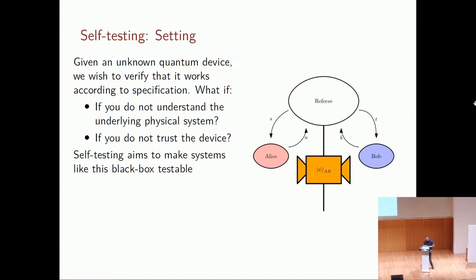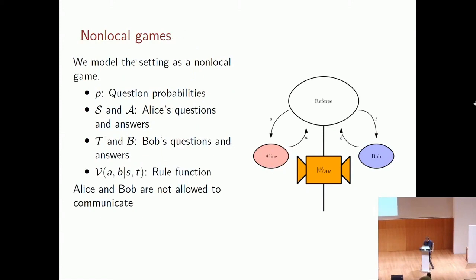The device in question is typically one that prepares a quantum state and can perform measurements on it, operating in a two-party setting. We model this setting through a non-local game: we ourselves act as a verifier playing the referee, while the device takes on the roles of the two players Alice and Bob.